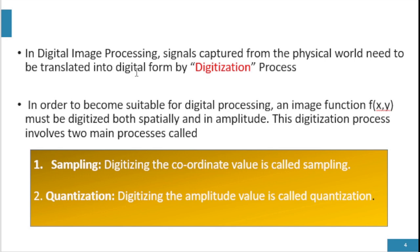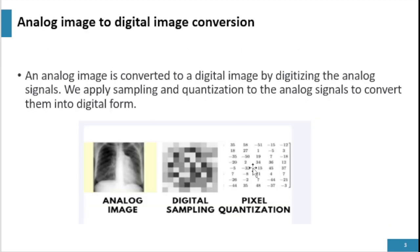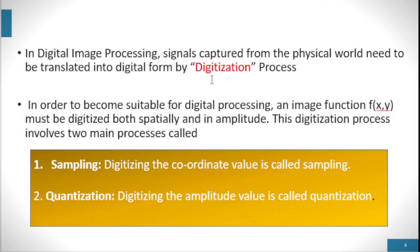A digital image is formed by arranging pixels in rows and columns. Each pixel has a particular integer value. As we see in this image, each pixel has a particular value and the computer processes these integer values to display that pixel. The process by which a continuous signal is converted into digital form is known as digitalization. In digital image processing, signals captured from the physical world need to be translated into digital form by digitalization.